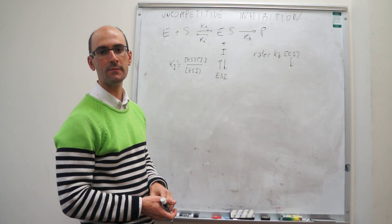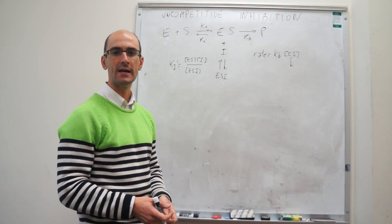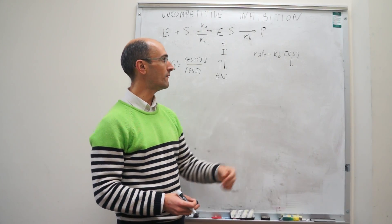So you would set up the mass balance of the enzyme expression, then put everything as a function of ES, solve for ES, and then plug it back in here, and find what the rate is.